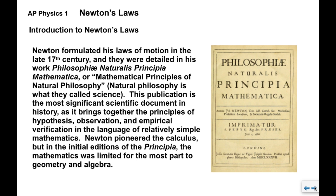Now, the laws of motion were formulated late in the 17th century. They were detailed in Newton's work, Philosophiæ Naturalis Principia Mathematica—probably not pronouncing that right, but I don't speak Latin. The translation is the Mathematical Principles of Natural Philosophy. Back in the 17th century, they called science natural philosophy. This is probably the most significant scientific document in history, bringing together principles of hypothesizing, observing, and verifying using empirical data in a language of relatively simple mathematics.